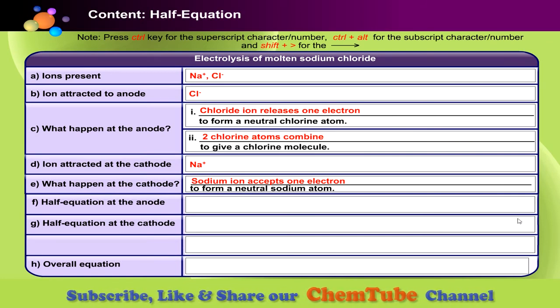Now, from the table, write half-equation at the anode and cathode. Press enter when you are done.